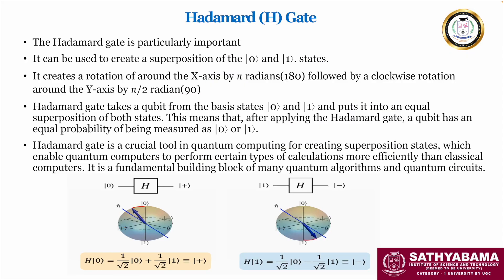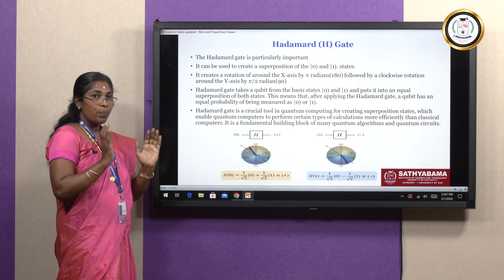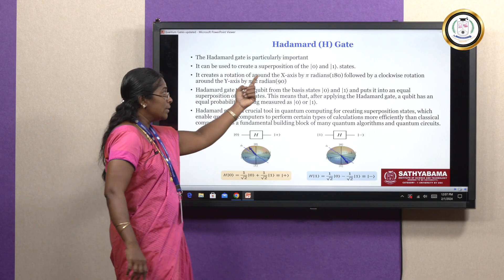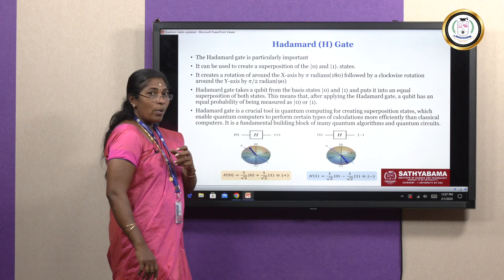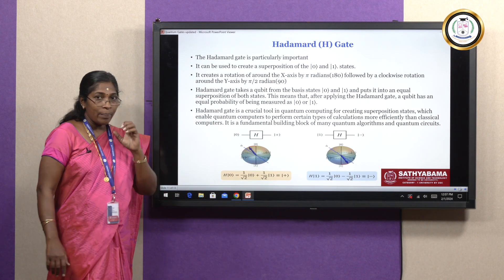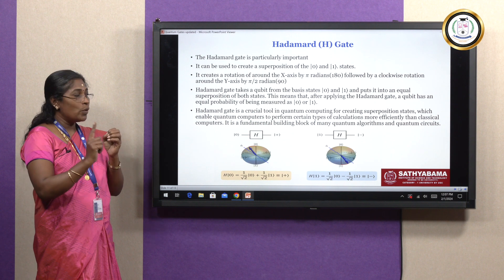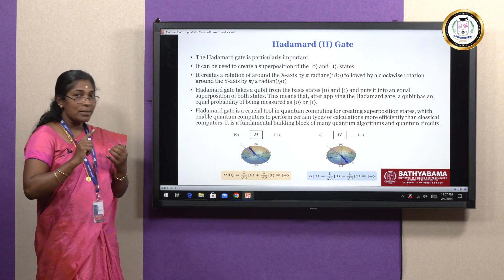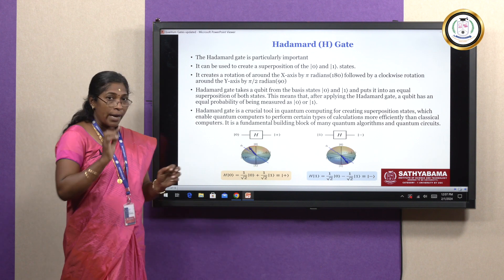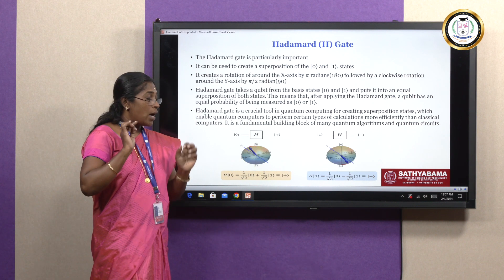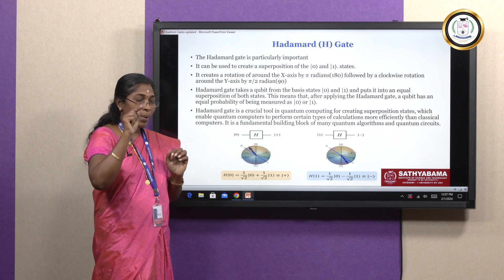The next is the Hadamard gate. The Hadamard gate plays a major or pivotal role because it creates the superposition states of the ground and excited states. With the help of the Hadamard gate, we can represent the superposition states of |0⟩ and |1⟩. In Pauli X, Y, and Z, the rotation is along their respective axes — X, Y, and Z — by pi radians. But the Hadamard gate rotates around the X axis by pi radians (180 degrees), then followed by a clockwise rotation around the Y axis by pi/2 radians (90 degrees).